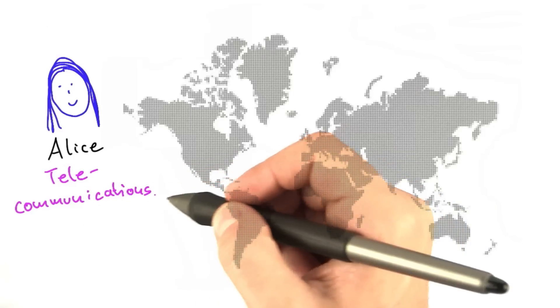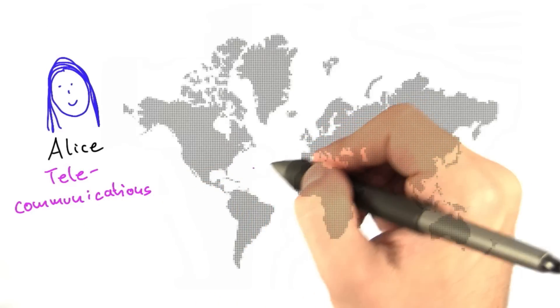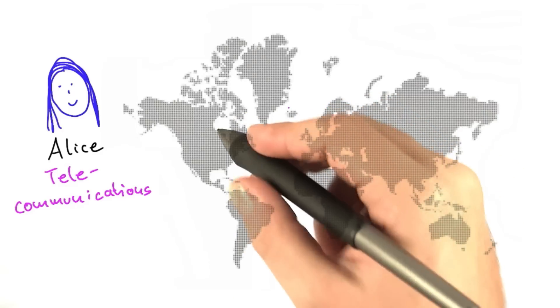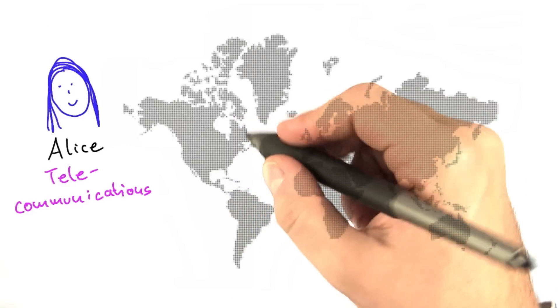Alice is working for a global telecommunications company that owns a telecommunications network around the world. So the network of her company looks something like this.